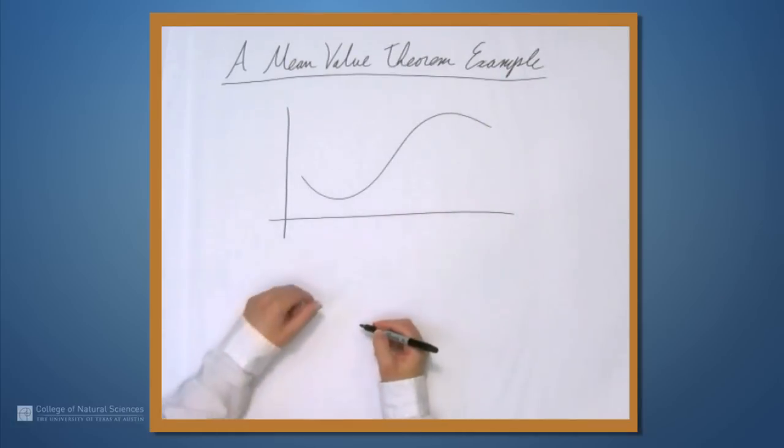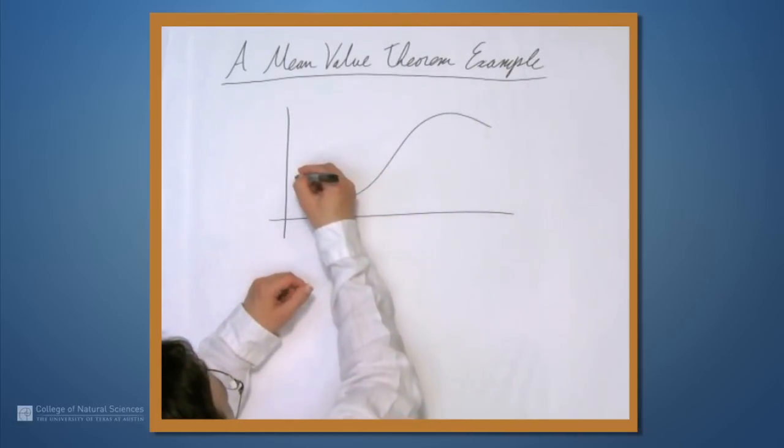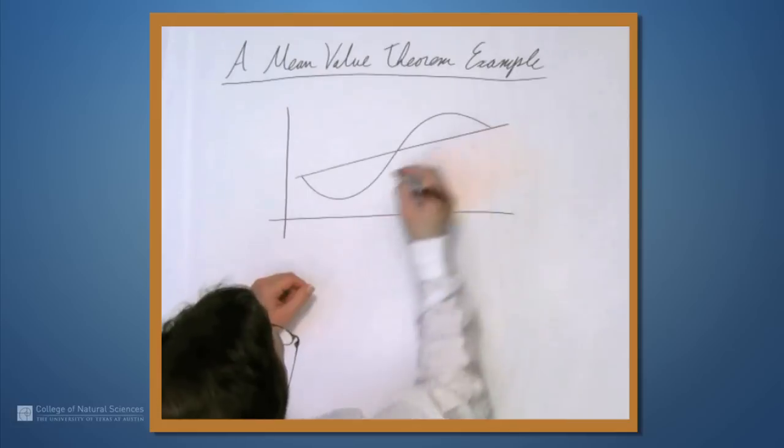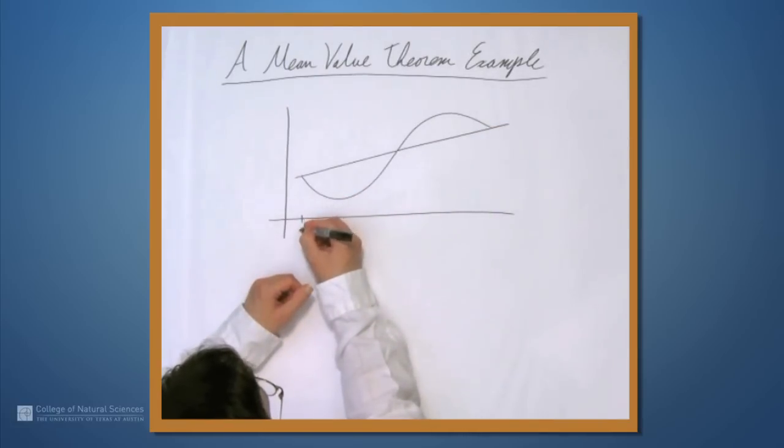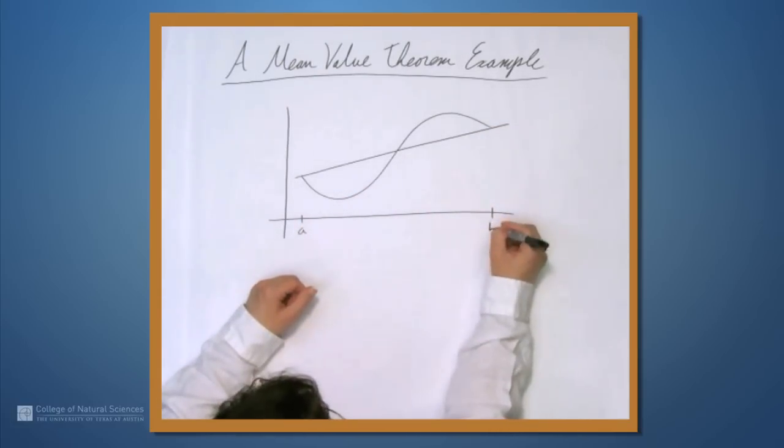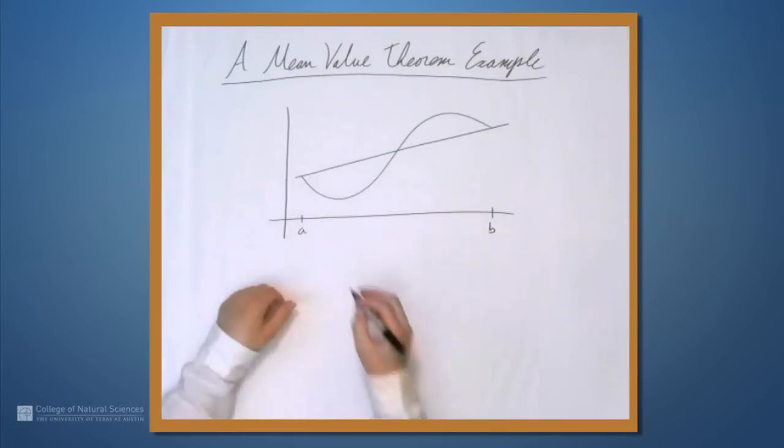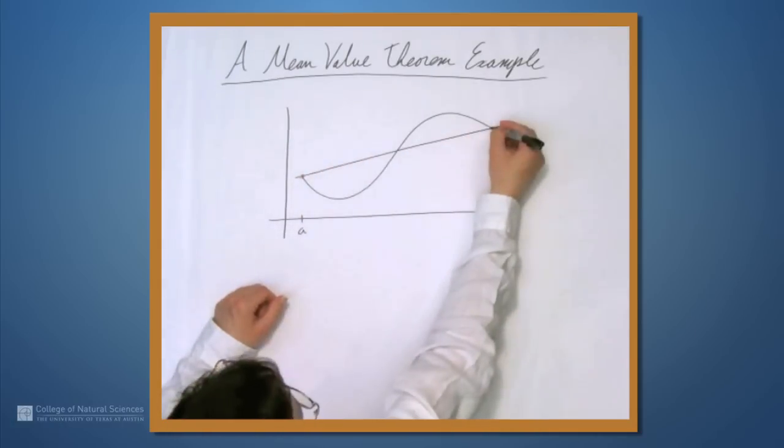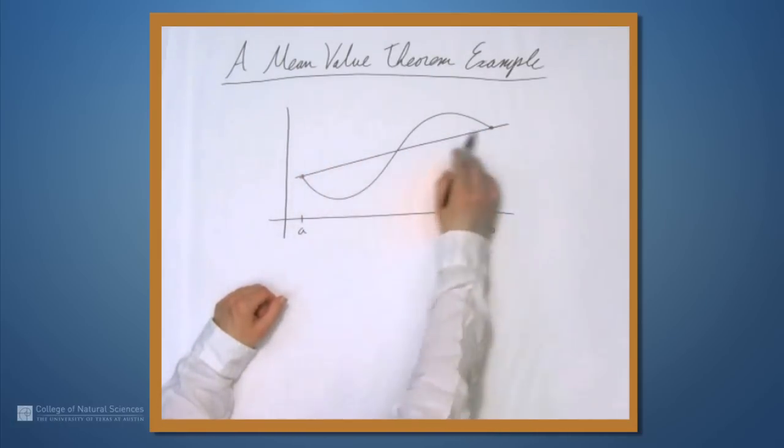So you have some function like this. It's nice and differentiable, and we're looking at how it behaves on this interval from a to b, in particular the slope of this line, the average rate of change.